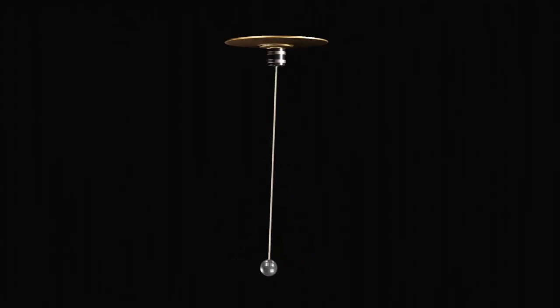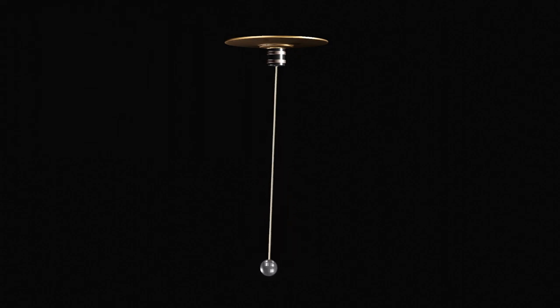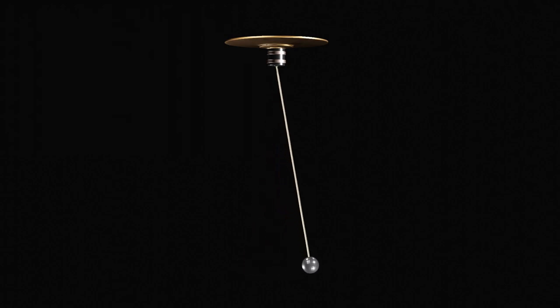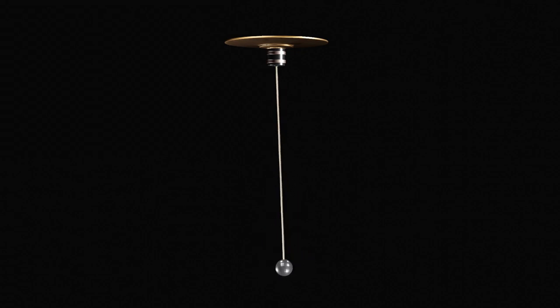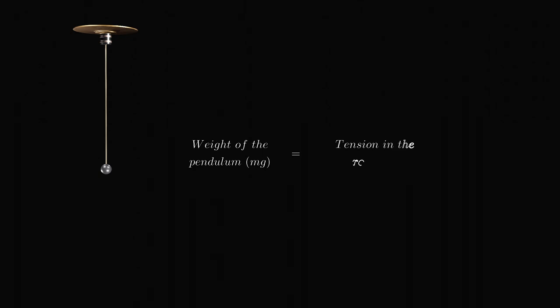In the next example, we'll delve into another case of oscillatory motion — specifically examining a simple pendulum. By applying the principles of simple harmonic motion, our objective is to formulate an expression for the angular frequency of the pendulum, and subsequently derive expressions for the period and frequency of the pendulum's oscillations. The position shown on the screen represents the equilibrium position of the pendulum, where the weight of the pendulum precisely counterbalances the tension in the rope, resulting in the absence of any net force acting on the pendulum.